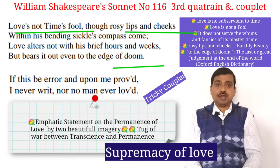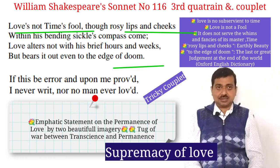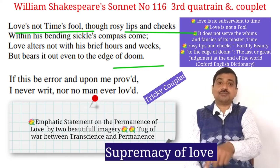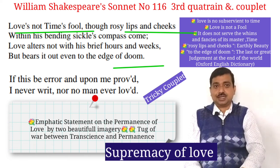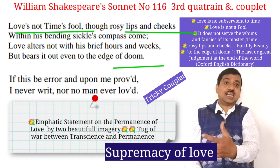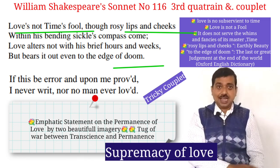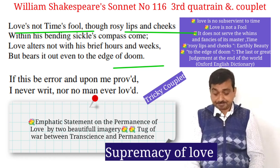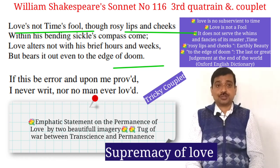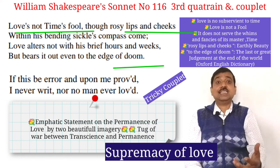He emphatically states that love, as an immortal passion, continues to exist throughout time and will exist even to the edge of doom — as told in the Bible, the destruction of this civilization. Until and unless there is destruction of the world, true love survives. After this final assertion of his thesis, he adopts a detached posture and throws his statement open to evaluation and criticism. In a tone of mock modesty he says: 'If this be error and upon me proved, I never writ, nor no man ever loved.' This is a very tactful way of asserting the validity of his argument.